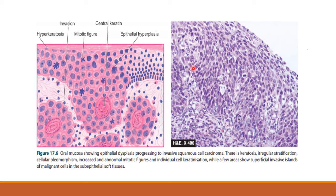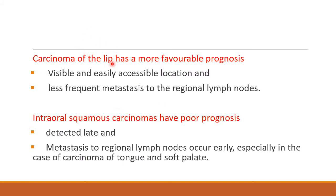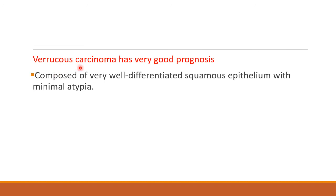Carcinoma of the lip has more favorable prognosis because it is visible and in an easily accessible location with less frequent metastasis to regional lymph nodes. Intraoral squamous cell carcinoma has poor prognosis because it is detected late and metastasis to regional lymph nodes occurs early, especially in carcinoma of the tongue and soft palate. Verrucous carcinoma has very good prognosis because it is composed of very well-differentiated squamous epithelium with minimal atypia.